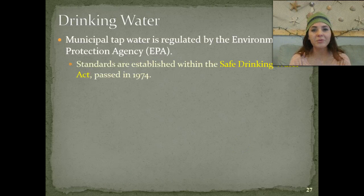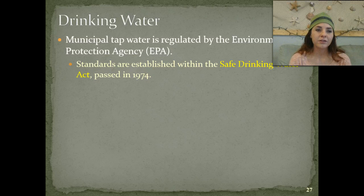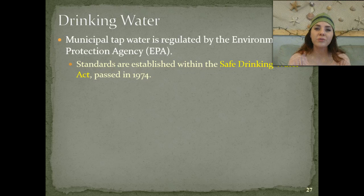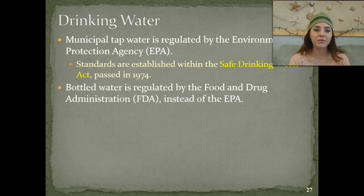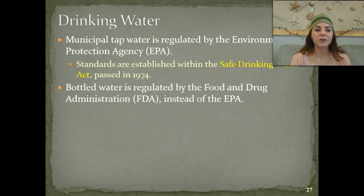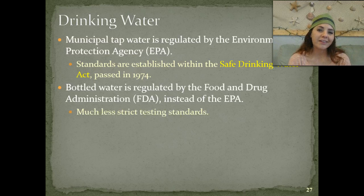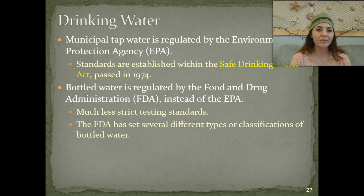So drinking water — obviously we need to have clean drinking water and we need to make sure that it's safe. Municipal tap water, meaning water used by the community, is regulated by the Environmental Protection Agency, or EPA. They have standards established within the Safe Drinking Water Act, which was passed in 1974. Bottled water is regulated by the Food and Drug Administration, or the FDA, instead of the EPA. The FDA is actually less strict when testing water, so they have fewer standards.